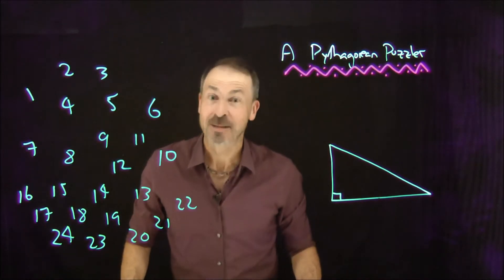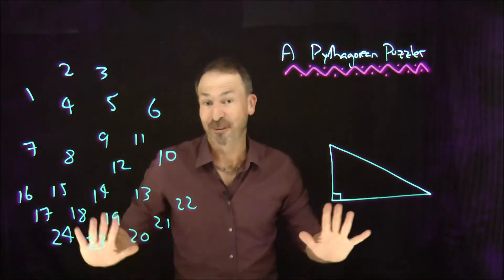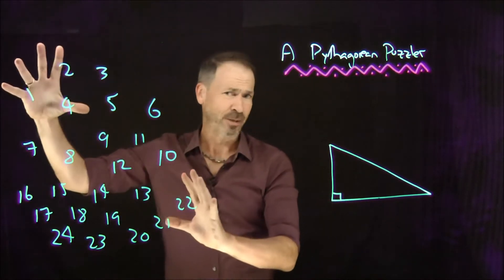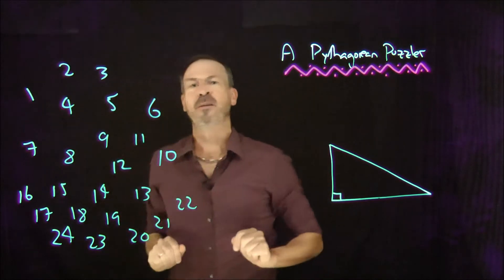G'day, I'm James, and here's a curious Pythagorean puzzler. It goes as follows. I've got numbers 1 through 24 written on the board in a sort of semi-random fashion. It doesn't matter, I just want the numbers 1 through 24 on the board.